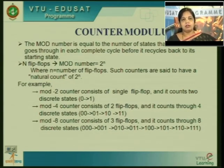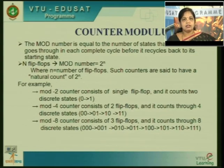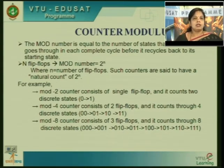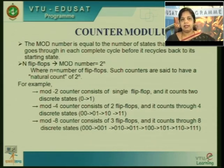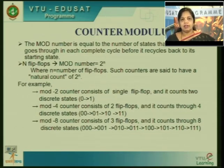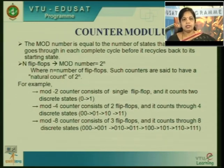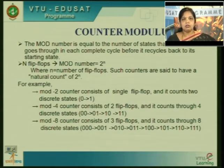For example, mod 2 has 2 states — it counts only 0 and 1. Since 2 to the power 1 equals 2, N equals 1, so you require only a single flip-flop to design a mod 2 counter. For mod 4: mod 4 has 4 states with count 0, 1, 2, 3. To count 0 to 3 you require 2 bits, which means 2 flip-flops — each bit held by one flip-flop.